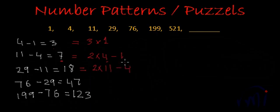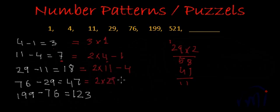Similarly, the difference is 47. Let's try 2 times 29 minus something. 2 times 29 is 58, and this is 47, so it can be written as 2 times 29 minus 11.